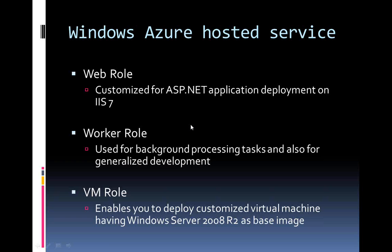Worker role is used for background processing, but you are free to write your own task. The second use of worker role is for generalized deployment, which is where the Java option comes in. You will need to upload the application server components and the JDK along with the role. So when you upload your worker role for Java, you upload the JDK, upload Tomcat or another supported app server, and start that server within the worker role.